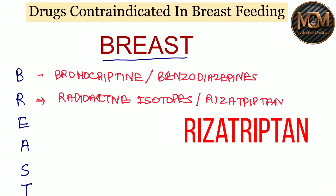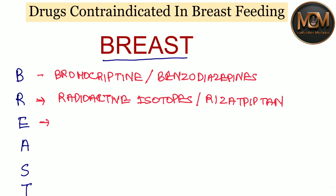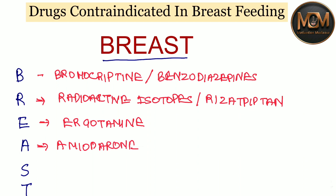From E, we have Ergotamine. From A, we have Amiodarone, and also Amphetamines.